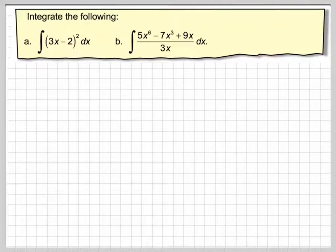Hi. Sometimes you have to do a little bit of simplifying first by either multiplying out or dividing before you actually do the integration. So integrate the following: the integral of (3x - 2)² dx and b) (5x⁶ - 7x³ + 9x)/(3x) dx.